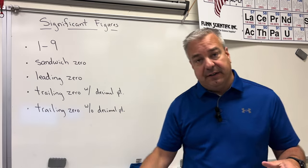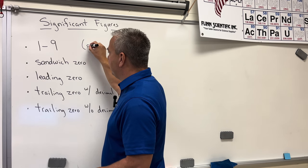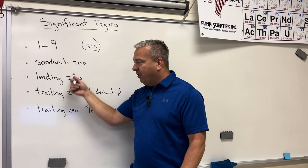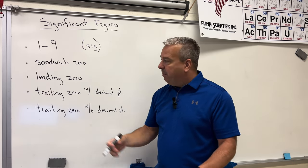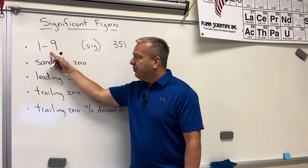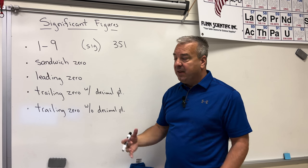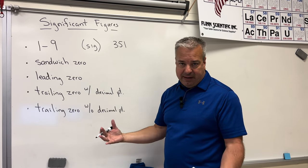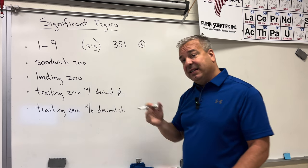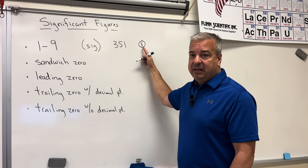When it comes to counting the number of significant figures, that's always the first objective. Digits one through nine are always significant — that's the easy part. The hard part is dealing with the different types of zeros. If you have the number 351, obviously all these digits are one through nine, and every one of them counts as a significant figure, so there are three significant figures.